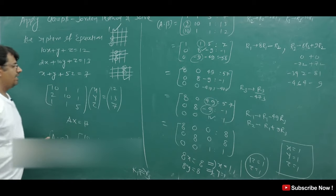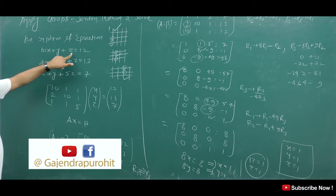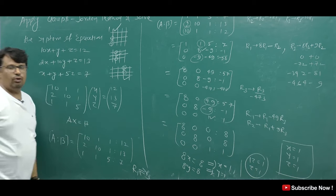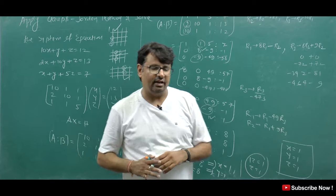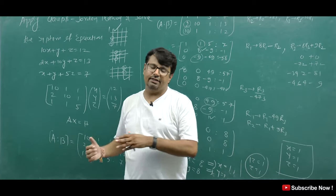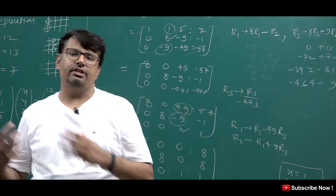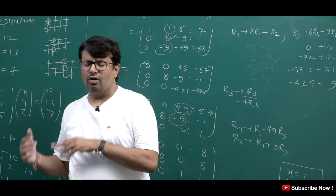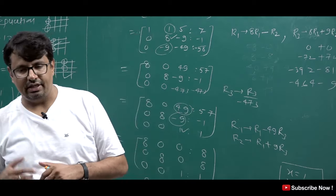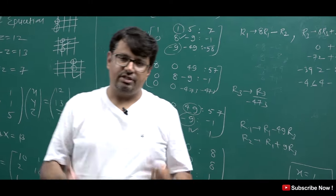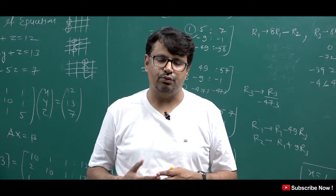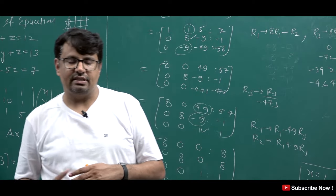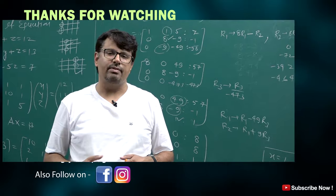You can verify by substituting x=1, y=1, z=1 into 10x+y+z: 10+1+1=12, which is correct. This is a very important direct method. The direct methods covered are Gauss Elimination and Gauss Jordan. After this, we will cover indirect methods like the Jacobi method, Gauss-Seidel method, and LU decomposition. This is important for engineering mathematics, BSc, and competitive exams like CSIR-NET, IIT JAM, and GATE.